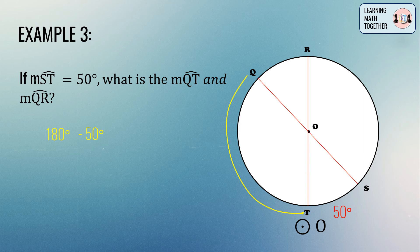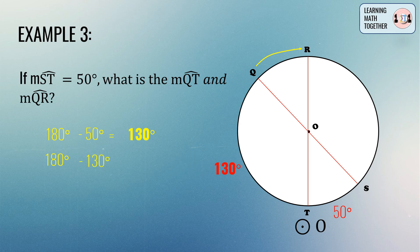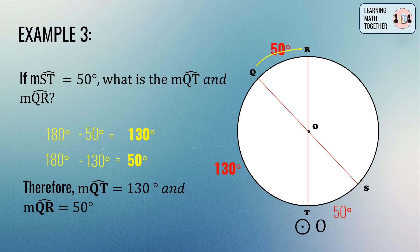Since semicircle QTS equals 180 degrees, we subtract the measurement of arc ST (50 degrees) from 180 degrees, giving us 130 degrees. Therefore, the measurement of arc QT is 130 degrees. Now for arc QR: it is connected to semicircle TQR, which also equals 180 degrees. Subtracting arc QT (130 degrees) from 180 degrees gives us 50 degrees. Therefore, the measurement of arc QR is 50 degrees.